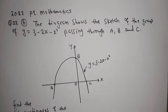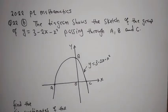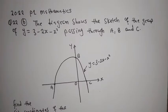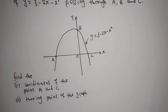So this is about a quadratic function, and it comes as a paper 1. Make sure that you do subscribe to the channel for more information. The statement of the question reads: the diagram shows the sketch of the graph of Y equals 3 minus 2X minus X squared, passing through A, B, and C. So let's see how we can answer this question.